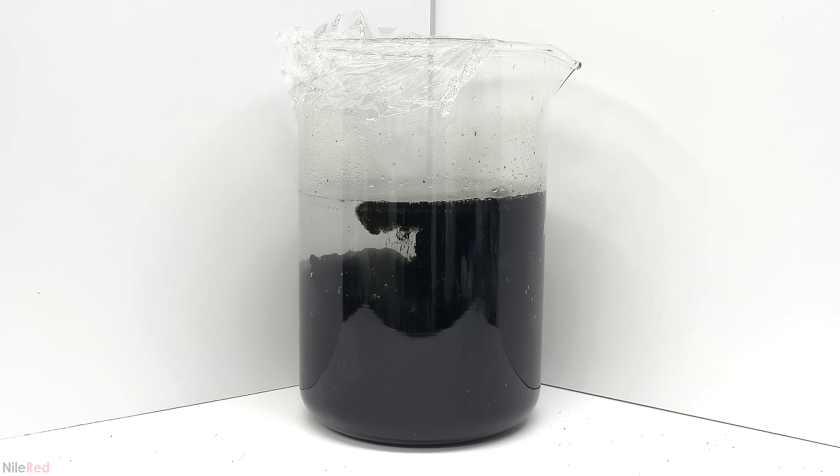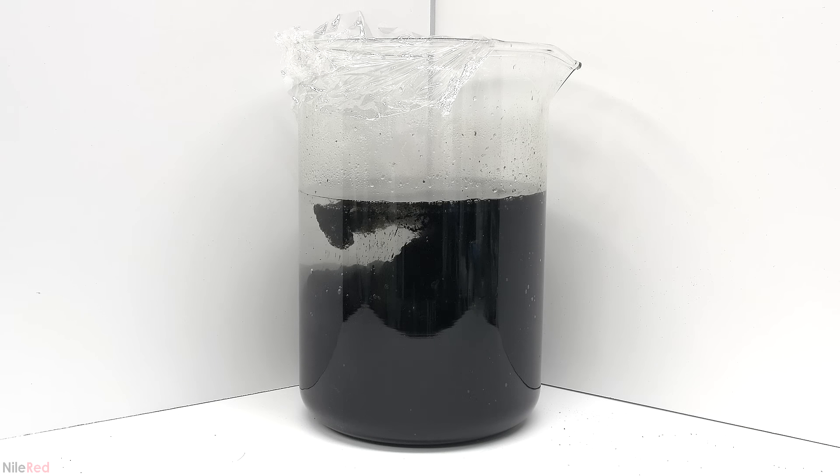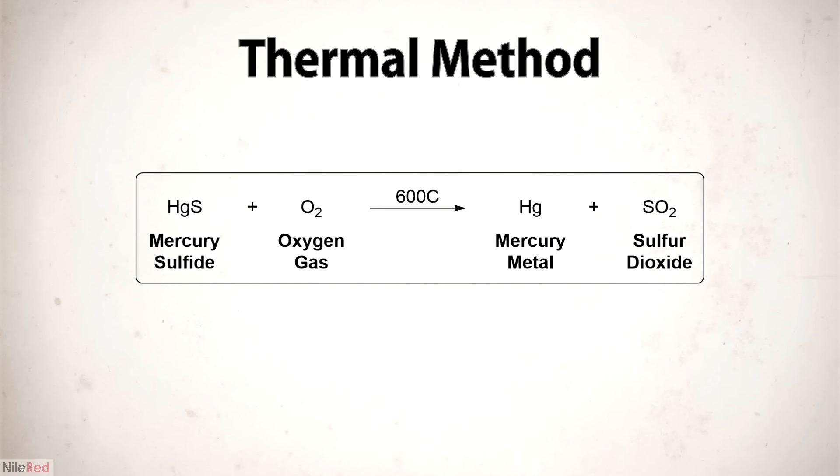The mercury metal can be extracted from the sulfide in two major ways: thermally and chemically. When heated in the presence of oxygen, mercury sulfide breaks down into metallic mercury and sulfur dioxide gas. The heating process is normally incredibly hot and above the boiling point of mercury, so the metallic mercury boils off and needs to be recondensed and recovered. The major downside of this method is that it produces mercury vapor, which can be quite dangerous.